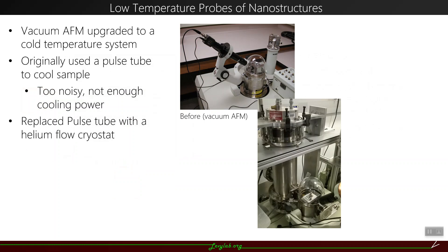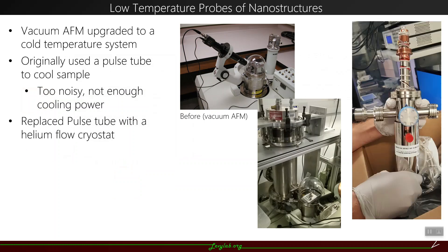We've taken a vacuum atomic force microscope and upgraded it to a cold temperature system. Initially we used a pulse tube, however that proved to be too noisy and also didn't have enough cooling power. Ideally we want to get below 10 Kelvin, but we could perform this experiment reliably below 25 Kelvin. Recently we replaced the pulse tube with a helium flow cryostat, which is much less mechanically noisy and has much more cooling power.